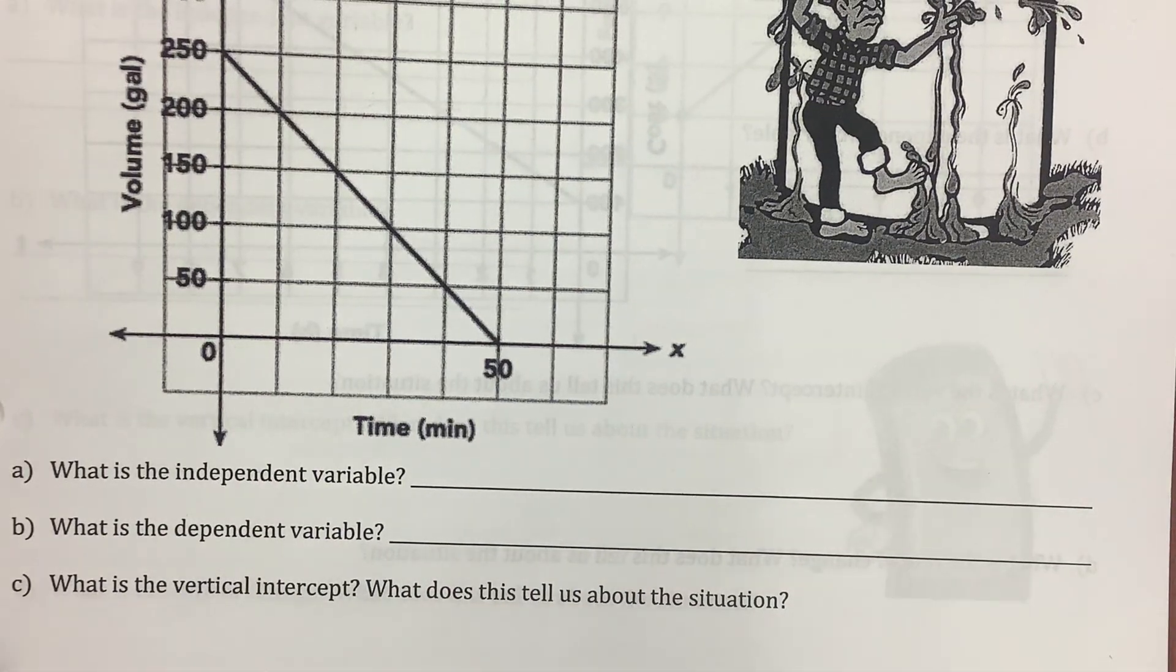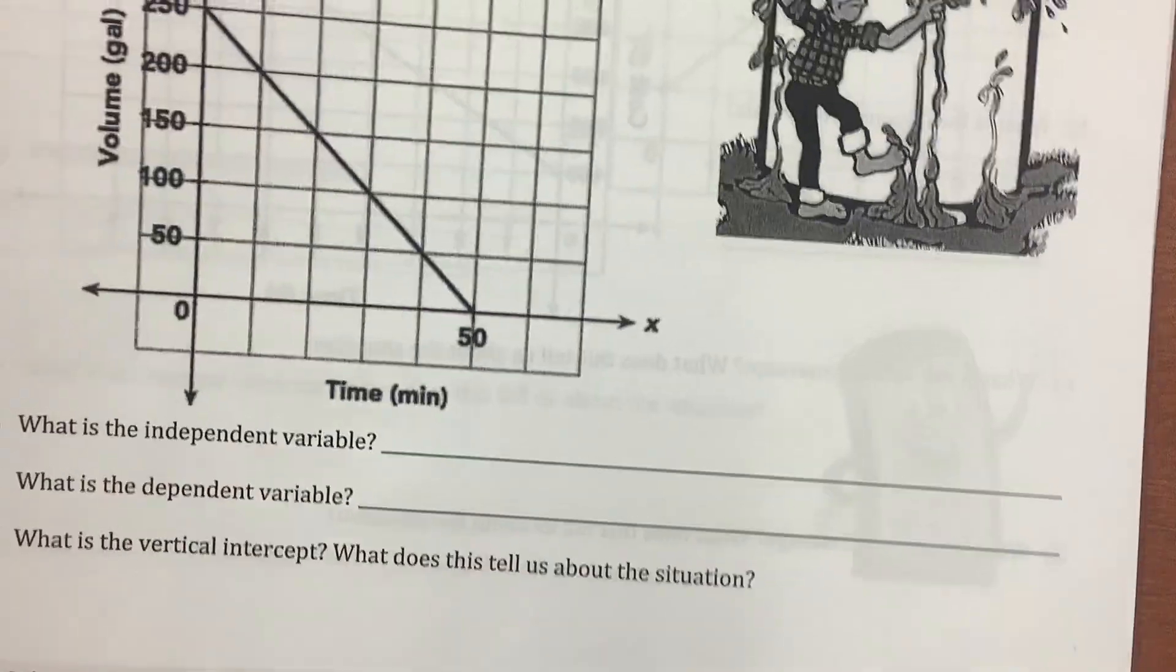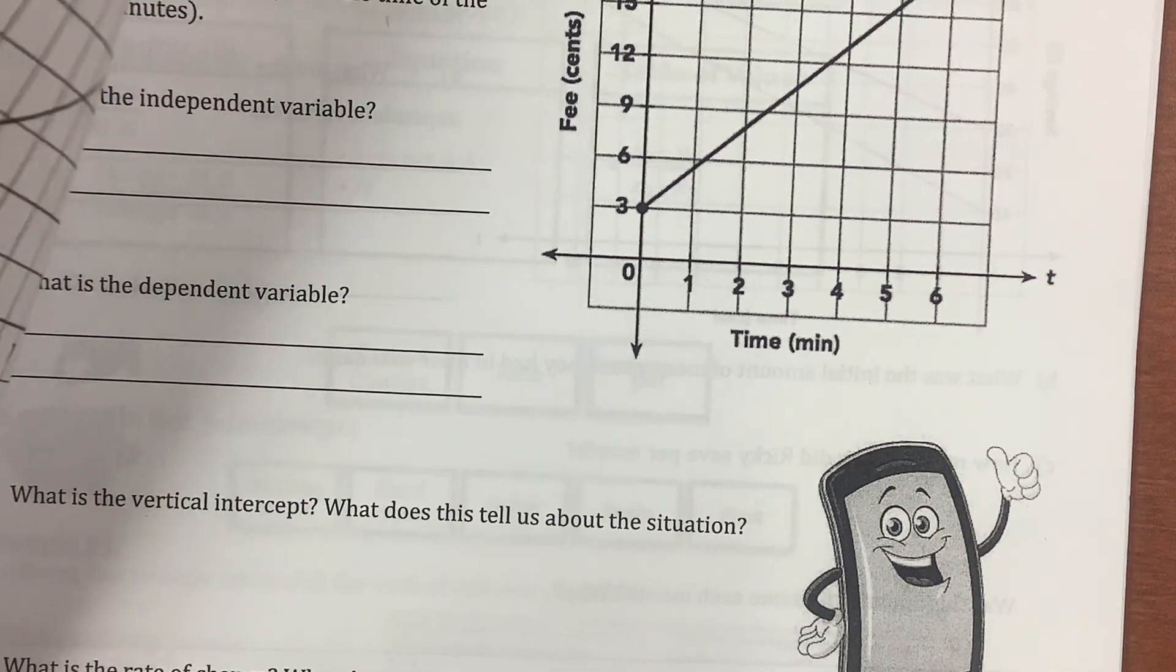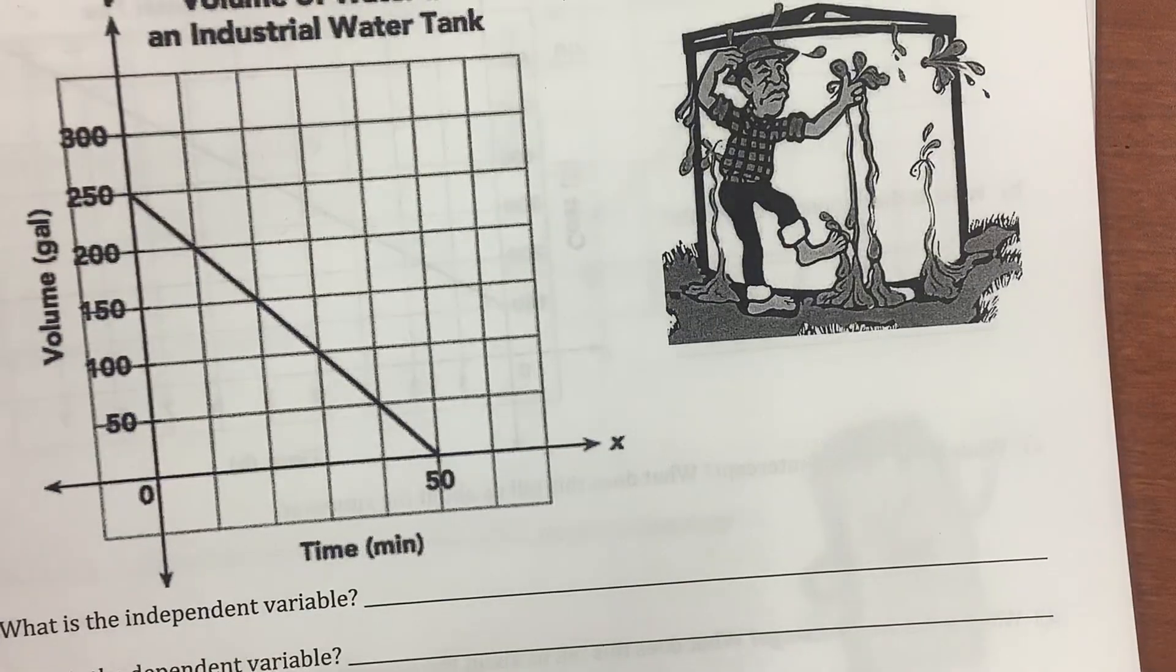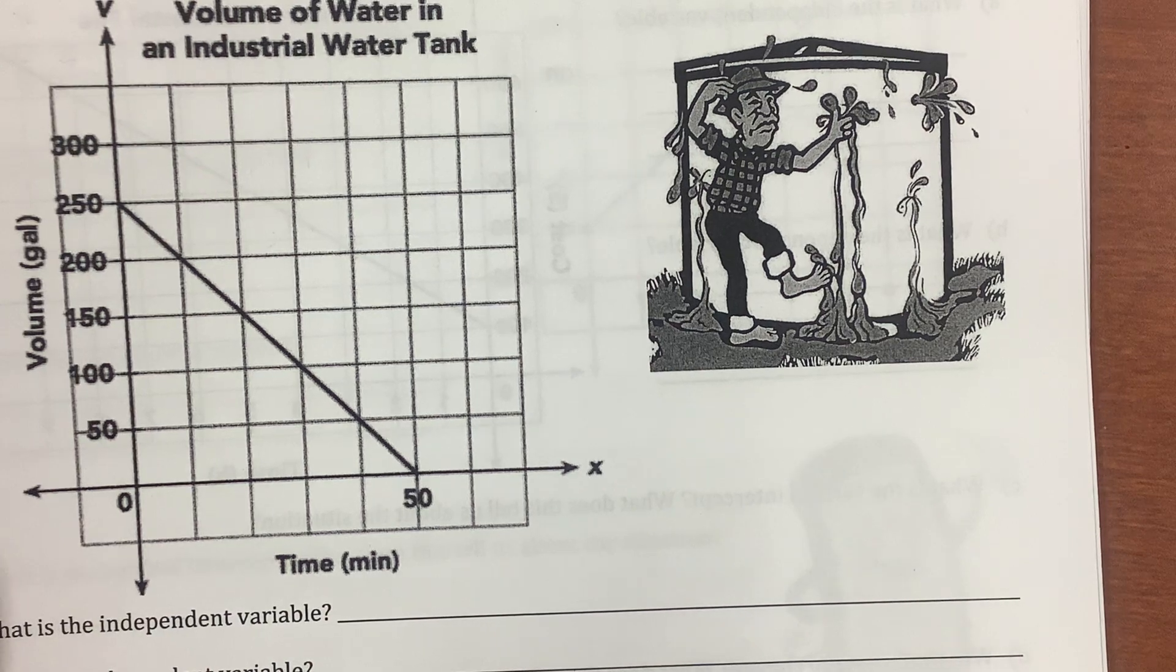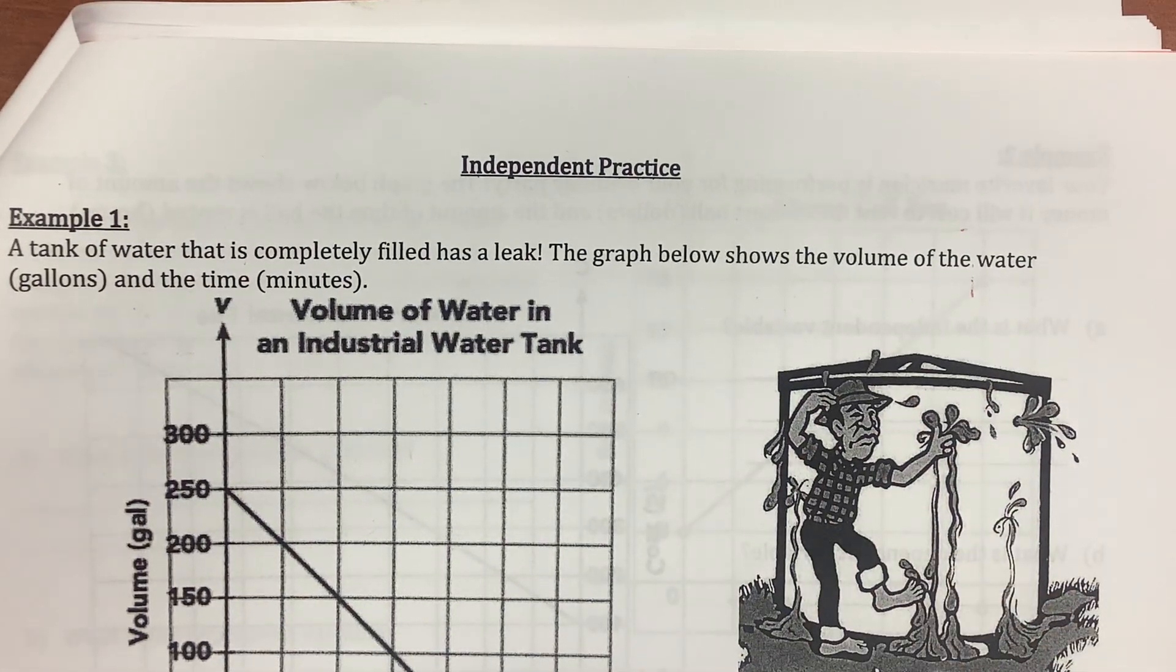Independent practice time. You know what to do. Do page 26 for homework. Wait. Is there more independent practice? Don't do all that. Just do page 26 with the silly little guy. I'll talk to you soon. Bye.